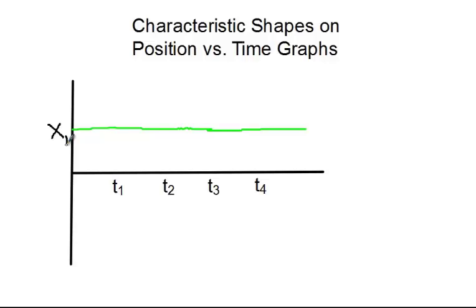If we were to look at the object's position at x1, or at t1, it's still at x1. At t2, still at x1. At t3, still at x1. At t4, still at x1. So what is our object, or how can we describe our object's motion for this shape on a position versus time graph? Exactly. The object is at rest. So we would describe our object in this case as being at rest.